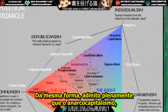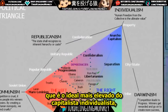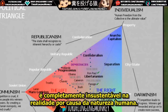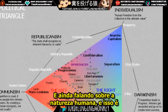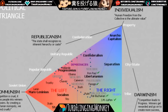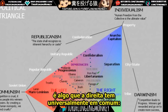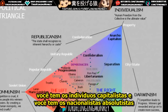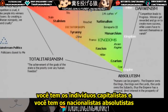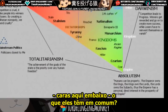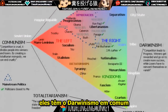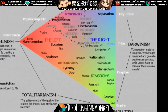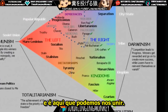I'll fully admit that anarcho-capitalism, the highest ideal of the individualist capitalist, is completely unsustainable in reality because of human nature. Another thing this chart reveals is what the right has universally in common: the individualist capitalists and the absolutist nationalists both share Darwinism. That's where we can come together.